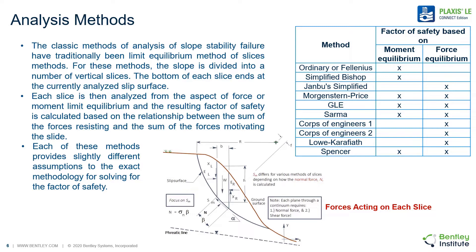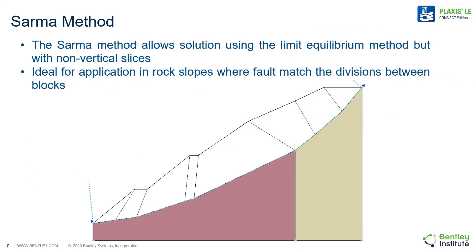All of these methods differ in the assumptions they make in the inter-slice shear and normal forces between the slices — that's the primary difference between them. The SARMA method uses block divisions that are not vertical slices and don't require vertical divisions between them, so they're ideal for application in rock slopes or where you want to fault-match the divisions between blocks, while still solving force and moment equilibrium.